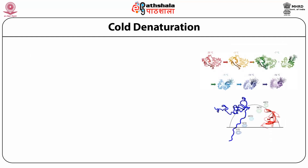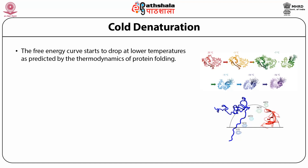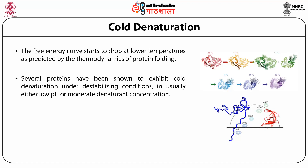We discuss cold denaturation of protein. Some proteins also denature as temperature moves to the lower end. You can see the protein structure at 25 degrees Celsius, and as you move down to minus 11 degrees Celsius a dramatic loss of protein structure occurs. The free energy curve starts to drop at lower temperature as predicted by the thermodynamics of protein folding, and several proteins have been shown to exhibit cold denaturation under destabilizing conditions, usually either low pH or moderate denaturant concentrations.